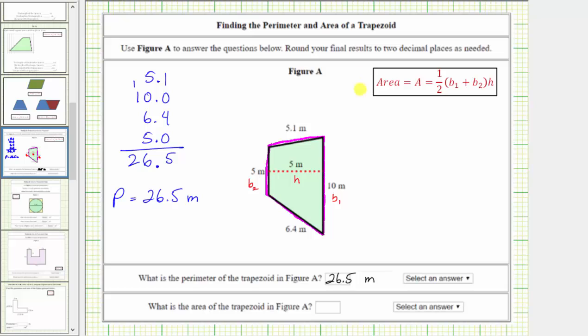So using the area formula, the area of the trapezoid is equal to 1/2 times the quantity 10 meters plus five meters times the height, which is five meters. And now we simplify the right side using the order of operations. We first simplify inside the parentheses, which gives us 1/2 times 15 times five.